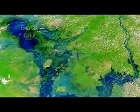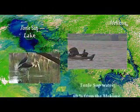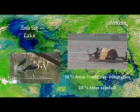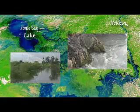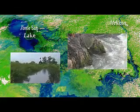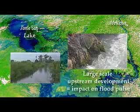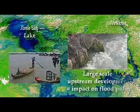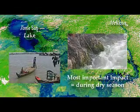The Tonle Sap water balance is strongly influenced by the Mekong. Almost 60% of the Tonle Sap water comes from the Mekong. 30% comes from the Tonle Sap tributaries, such as the Stonchenet, and rainfall over the lake only provides the rest. Therefore, any upstream development will largely impact the flood pulse in the Tonle Sap system. The most important impacts will be experienced during the dry season.